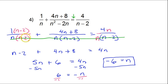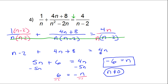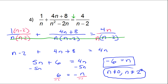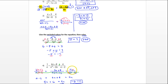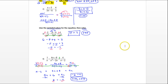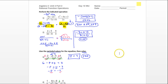For excluded values, once I factored it I can see two: N cannot equal 0 because of the N, and N cannot equal 2 because of the N minus 2. So those are my excluded values. That's it for number 4, and that's going to do it for this video — I hope it was helpful and I will see you on the next video.